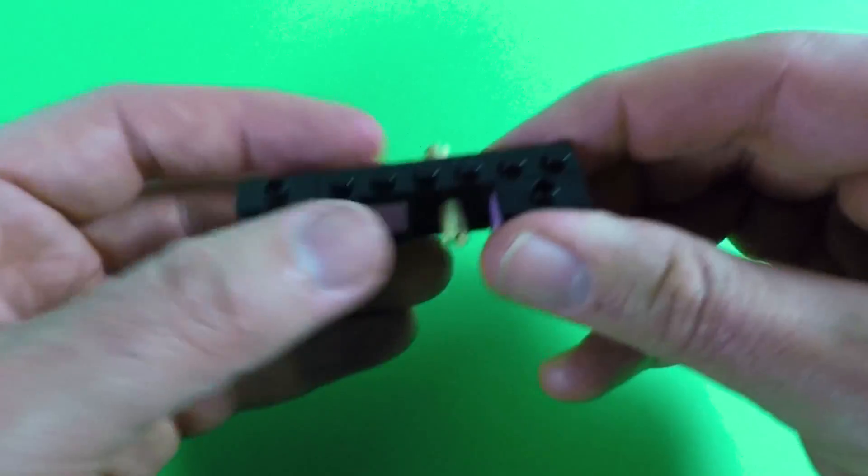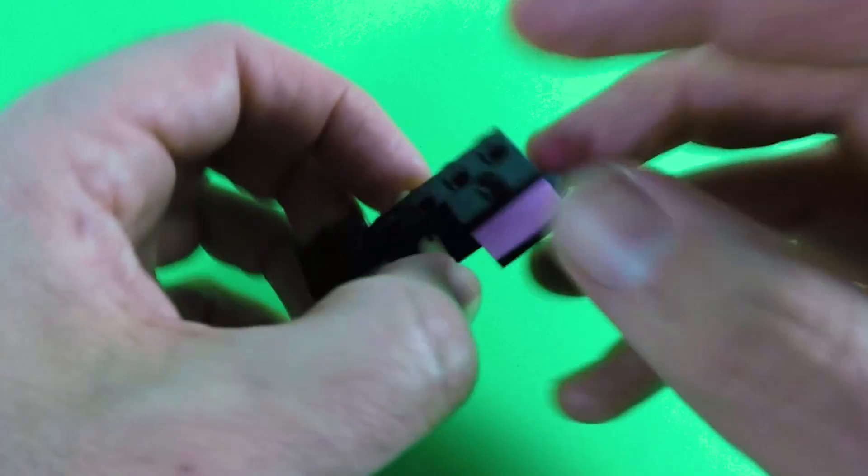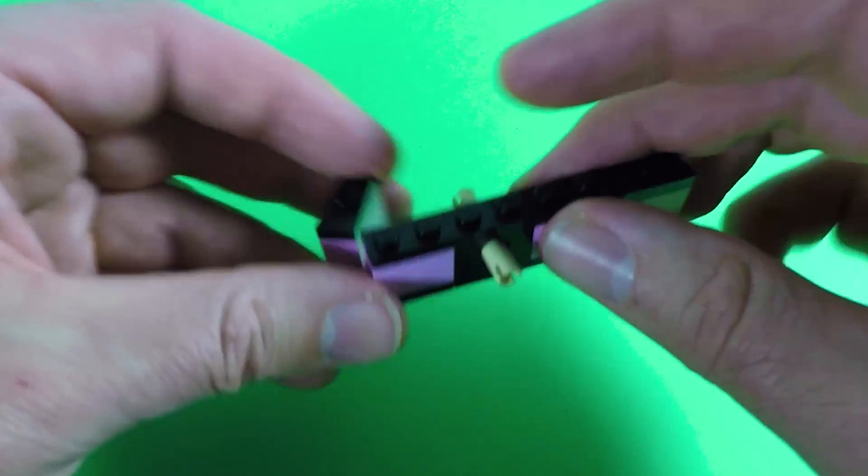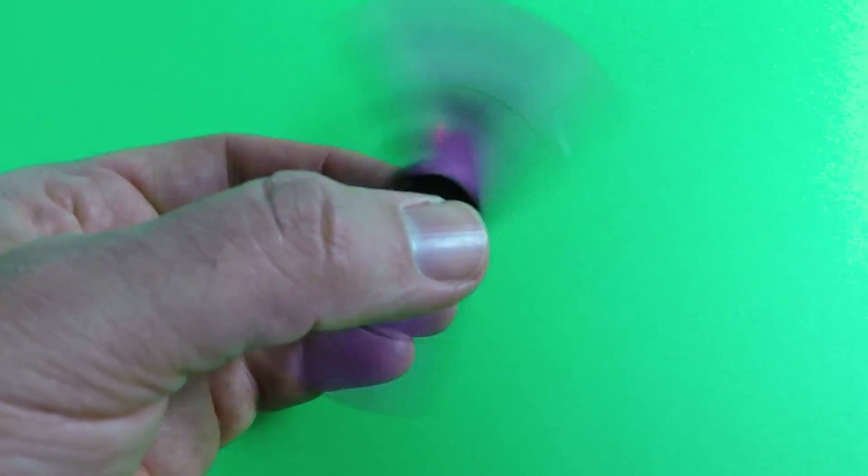And once you've finished playing with it, you can pop it back in your pocket because it's nice and small. And then when you're ready to play again, you just fold it out, make it nice and flat, and get some really good spin times.